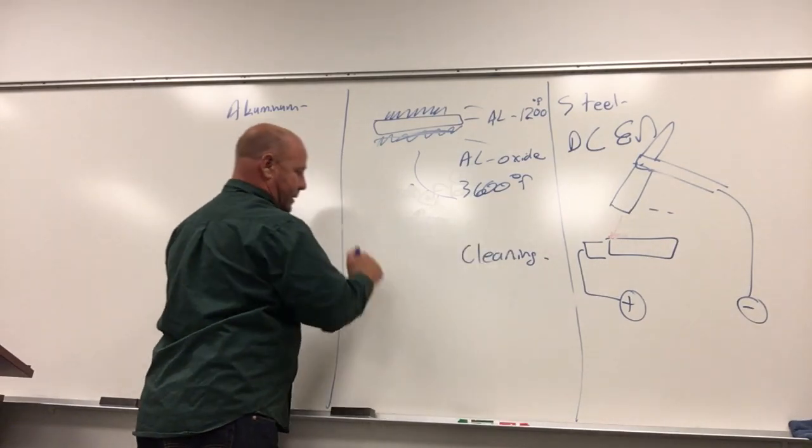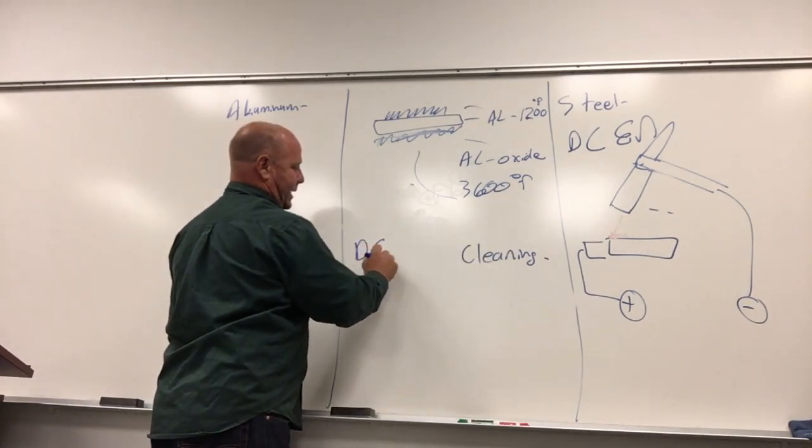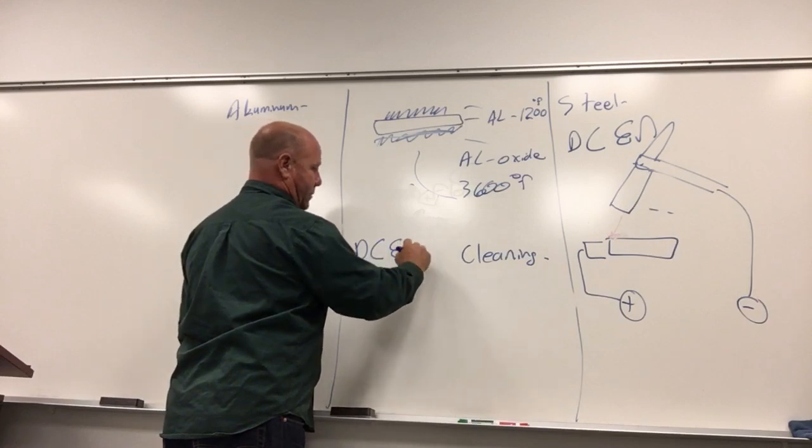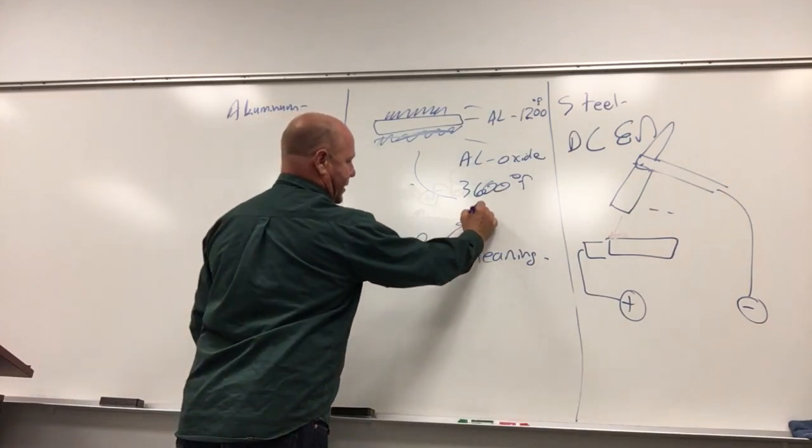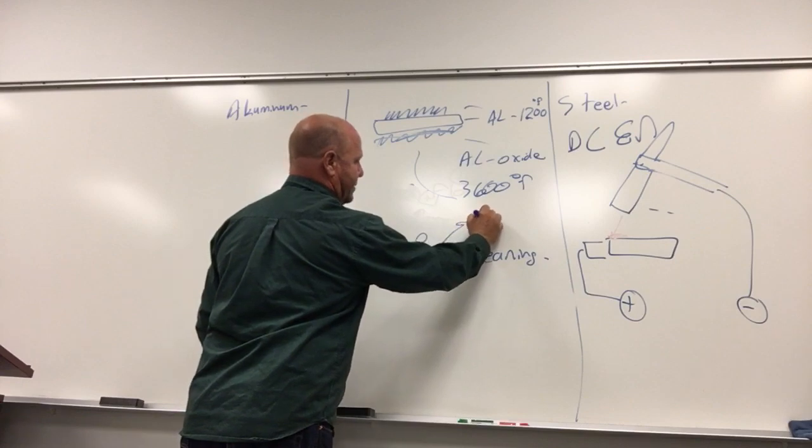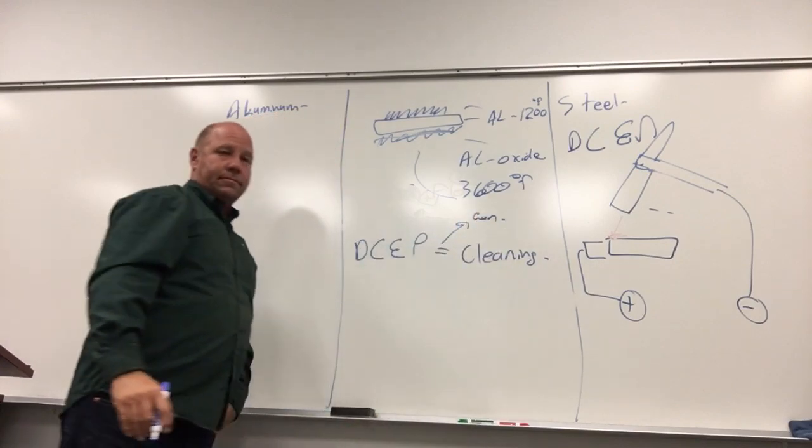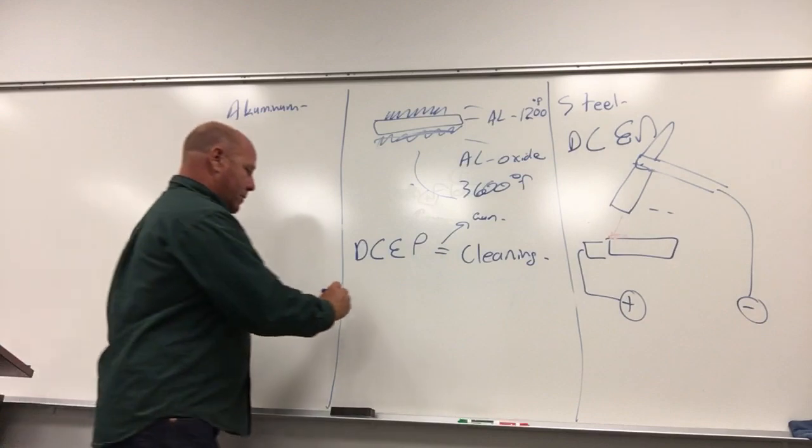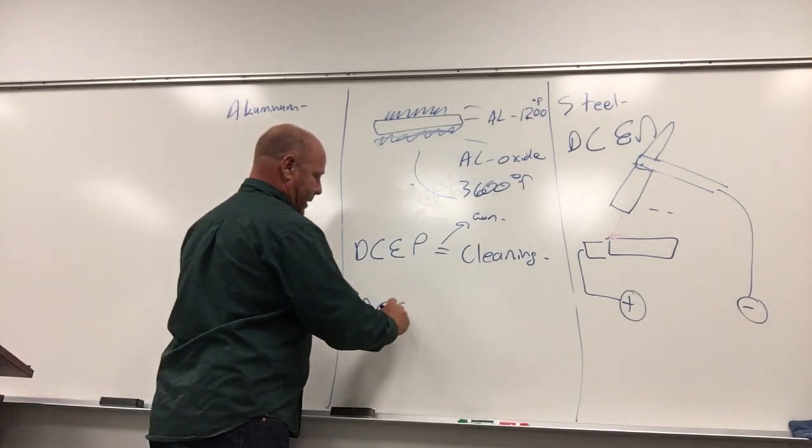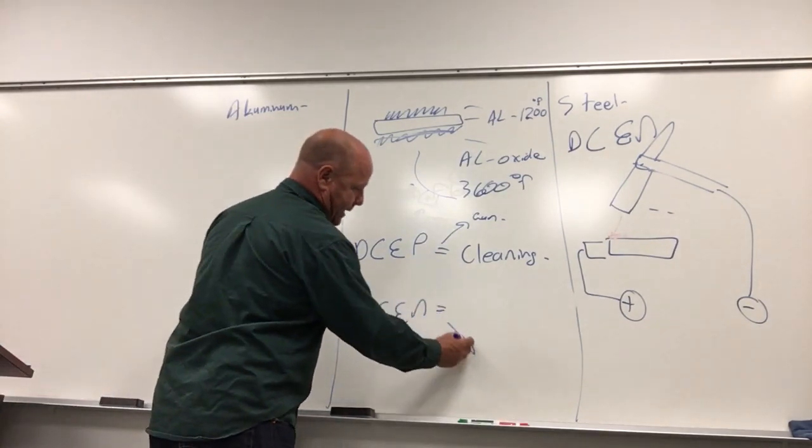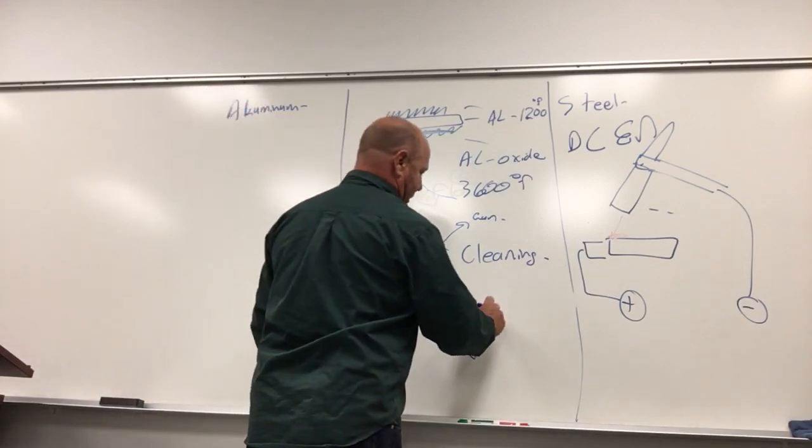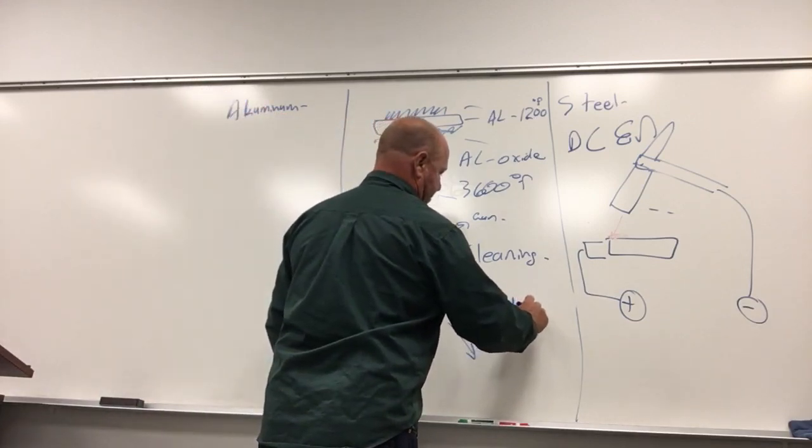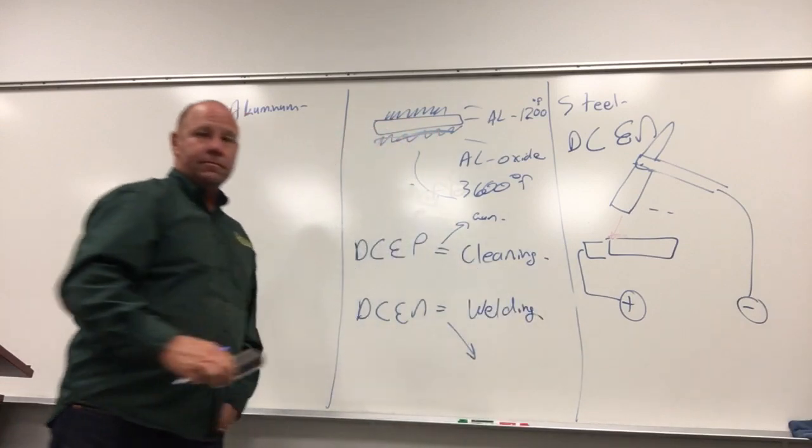So cleaning is going to be when the charge is DC electrode positive. That means the electrons are going towards the gun. In order to weld now, we need DC electrode negative. That's when the electrons are going down towards the plate. This is when we're welding. Simple enough.